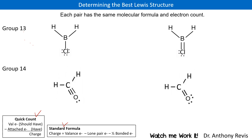So let's get going. In the case of the first compound shown on the left, we're going to check for the octet rule and this is 2, 4, 6 around boron. Group 13, by the way, likes an octet of 6, and so that's good — it checks out on the octet rule. If we check the charges around boron using the quick count method, it would be 3 valence electrons minus 3, and that gives us 0 for boron.